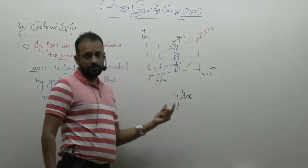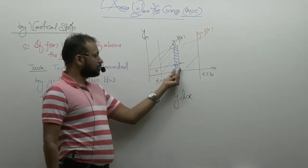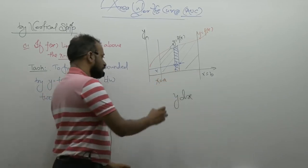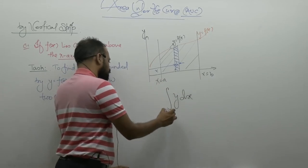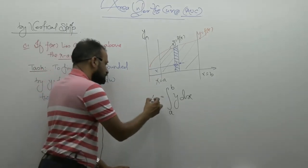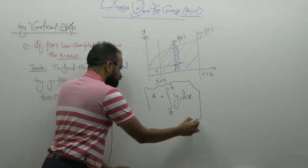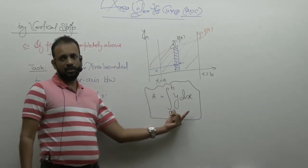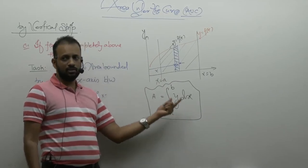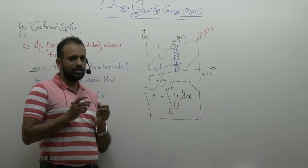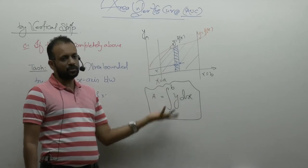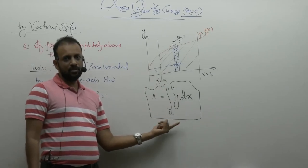So the area of this rectangle is y·dx or f(x)·dx. Such strips from a to b — if we add them, their continuous addition can be represented as integral from a to b, and this will give me the area of my required field. This is what we also did in definite integration. Definite integration does not give me the area directly, but it helps give the area — if the curve is completely above the x-axis, then it gives the area.